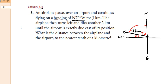We also know that this angle is 20 degrees, because it and the 70 degrees have to add up to 90. The airplane then turns left and flies another two kilometers until the airport is exactly due east of its position.